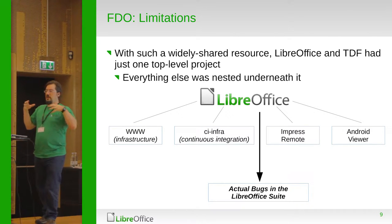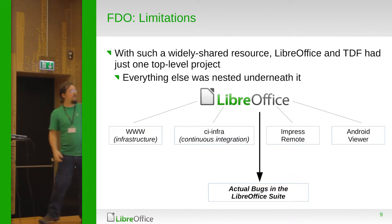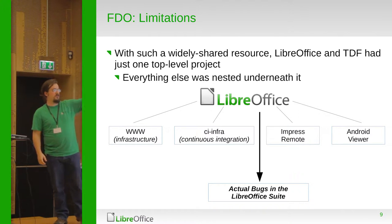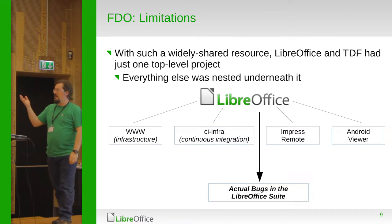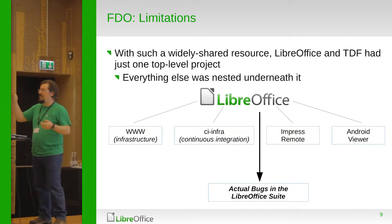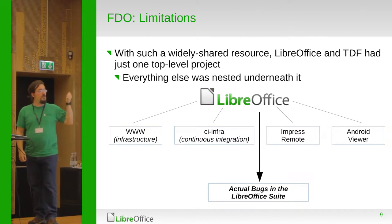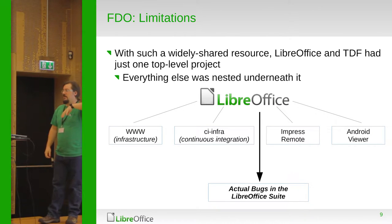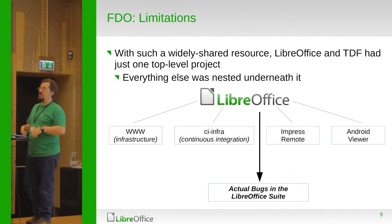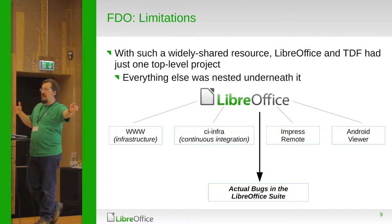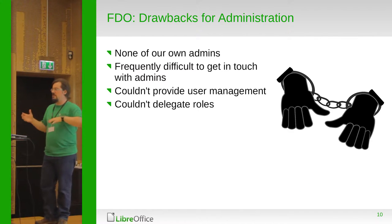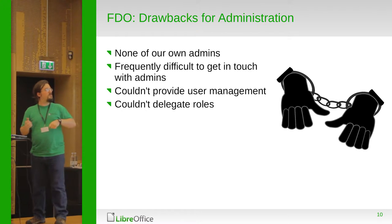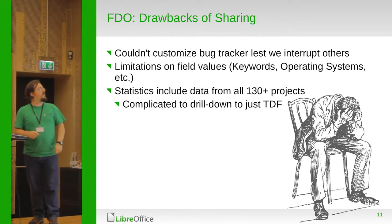It meant we couldn't expand and accurately track what we were doing. Everything including our infrastructure, continuous integration, the Impress Remote, and our Android viewer were all lumped in with bugs inside LibreOffice itself. We also didn't have our own administrators — we couldn't delegate user management or roles. It was difficult to concentrate on just our Document Foundation bugs, and we had limitations on values.